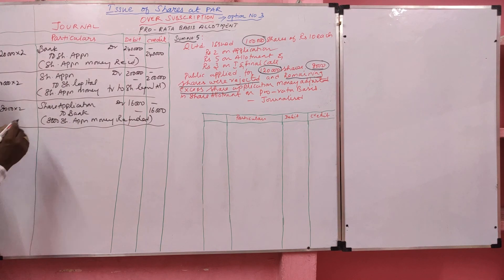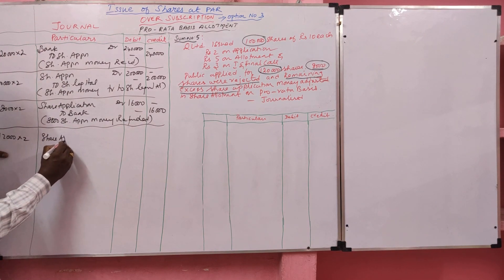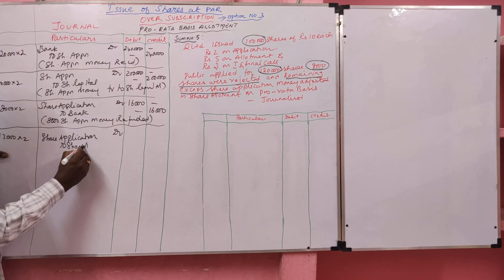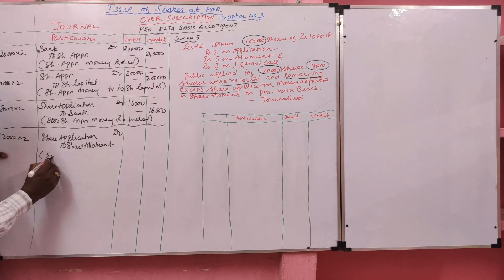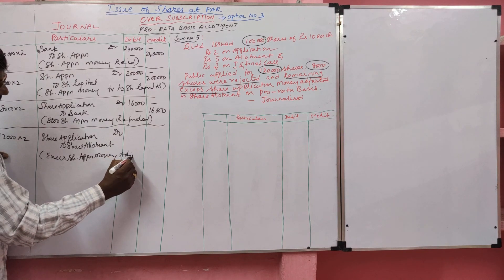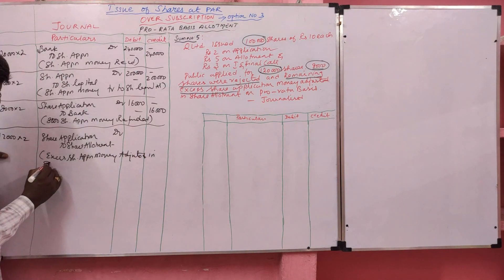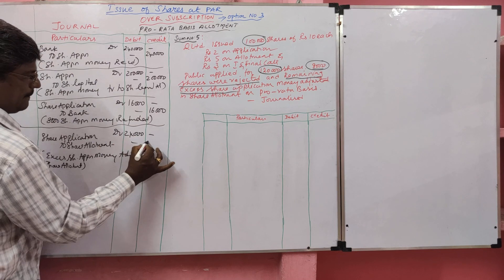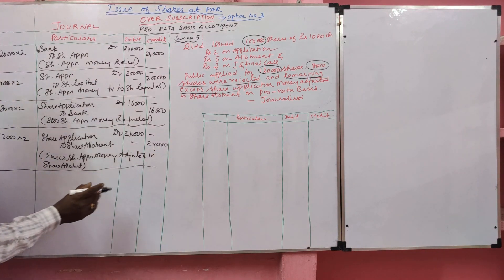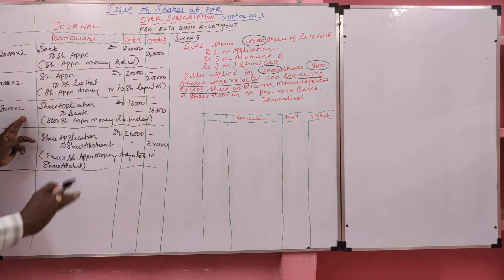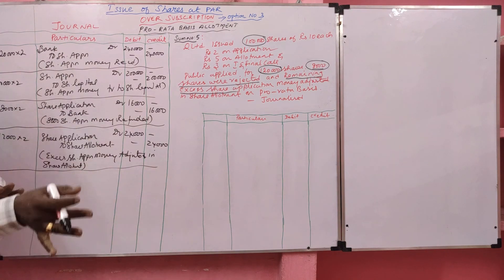Next entry: Share Application Account Dr to Share Allotment. Excess share application money adjusted in share allotment. How much? 12,000 × Rs. 2 = Rs. 24,000. We received 1,20,000 applications; 1,00,000 transferred to capital; excess 20,000 — of which 8,000 rejected and refunded, remaining 12,000 shares rejected but money not refunded, taken to allotment.